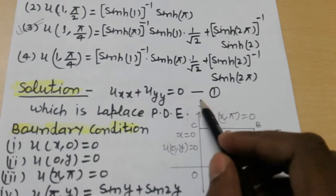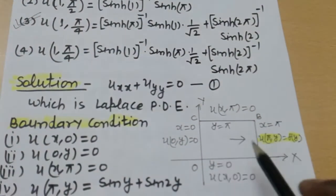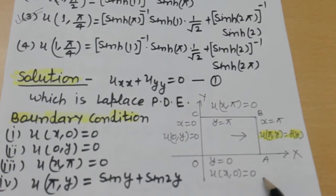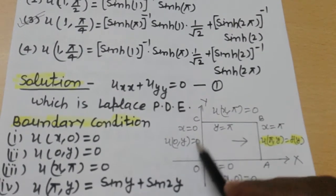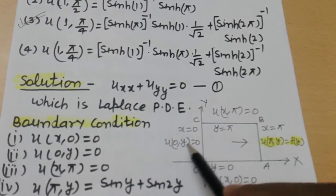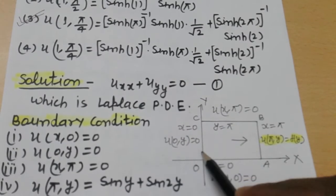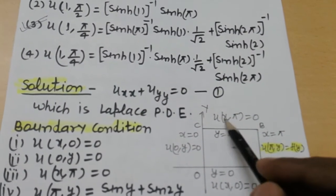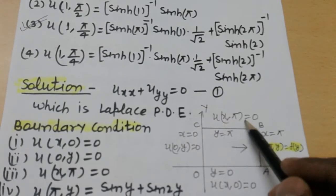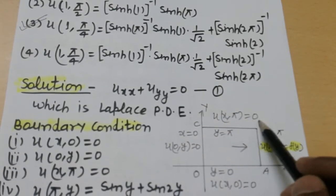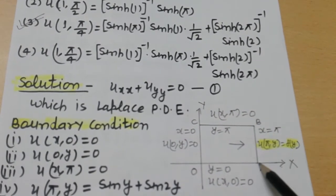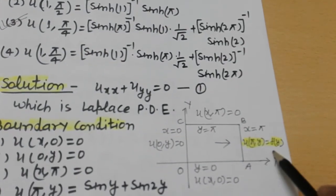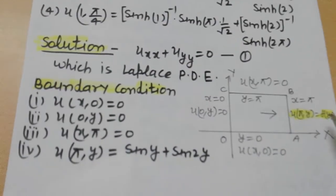Now, identifying which is the x-axis and which is the y-axis: y = 0 gives u(x,0) = 0; x = 0 gives u(0,y) = 0; y = π gives u(x,π) = 0; and x = π gives u(π,y) = f(y).